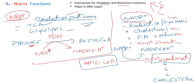Apart from these metabolic functions, niacin also helps in the DNA repair mechanism. Whenever there is DNA damage, a group of enzymes and proteins is involved in repair, and niacin acts as a coenzyme for many of these enzymes. These are the two important functions of niacin.